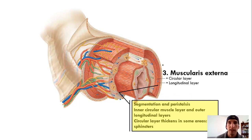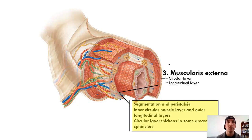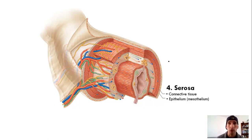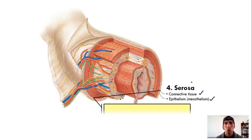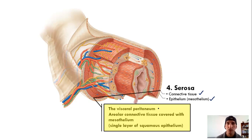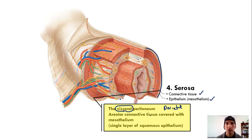Three layers down, one to go. We're now at the external covering — think back to your serous membranes, visceral versus parietal. The fourth layer is the serosa, or serous membrane, made up of areolar connective tissue with a single layer of squamous cells called a mesothelium on top. This is the visceral peritoneum — visceral meaning actually in contact with the organs — as opposed to the parietal lining of the cavity itself.